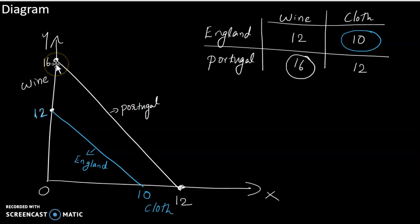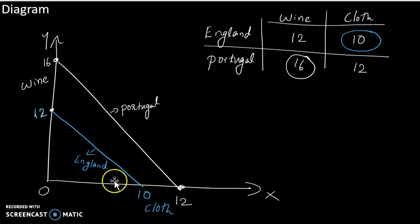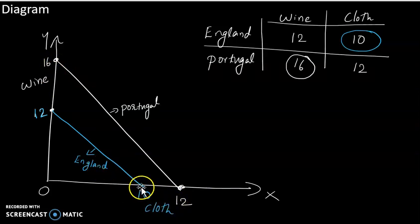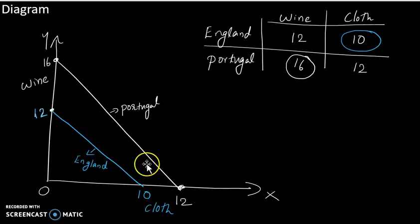For 12 units, they produce less opportunity cost. In England, they produce clothes — for 10 units, they produce less opportunity cost. In Portugal, they produce wine — less opportunity cost, 10 units of wine.